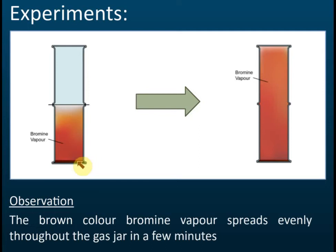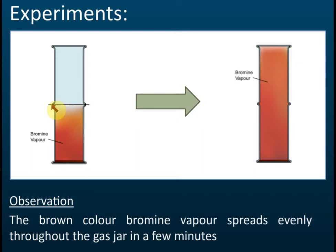For diffusion in gas, we use bromine. At room temperature, bromine exists as a liquid, but it is volatile, meaning it evaporates easily. So if you place liquid bromine in a gas jar, it will evaporate and fill the jar. We close the top with a cardboard, then place another gas jar on top and remove the cardboard.